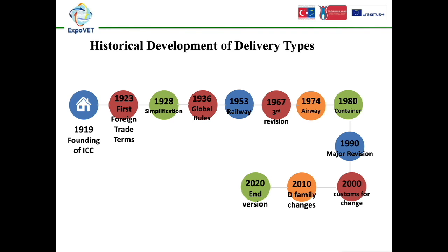With Incoterms 2020, which entered into force on January 1, 2020, arrangements were made in delivery methods. According to the new regulations, the DAT delivery method was removed from application. DPU has been defined as a new form of delivery. Various changes have also been made in the content of EXW and DDP rules, and some parts of the previous FCA delivery form have been clarified.